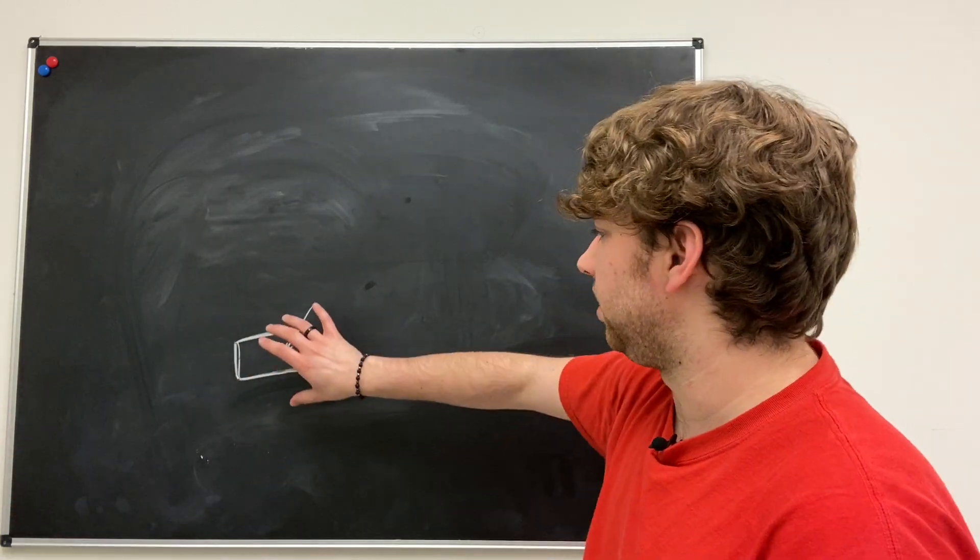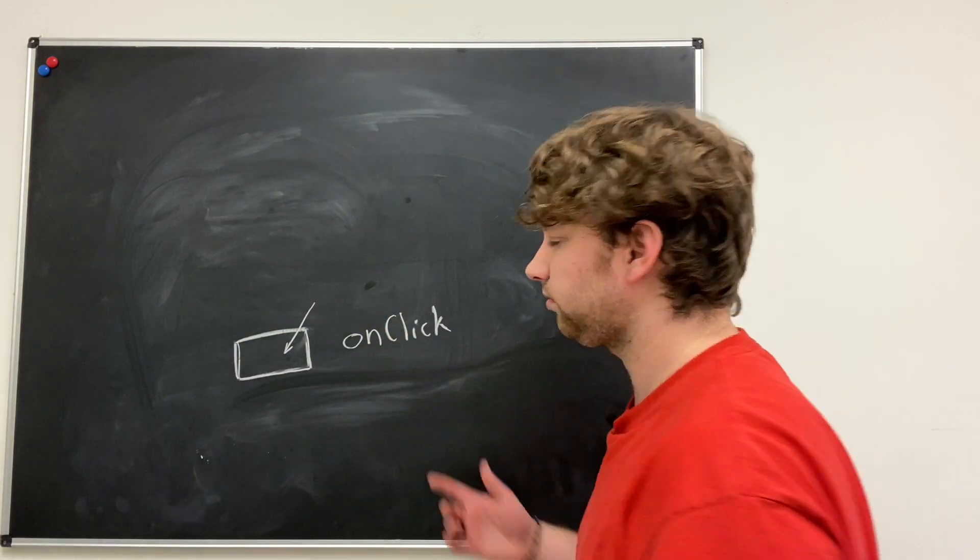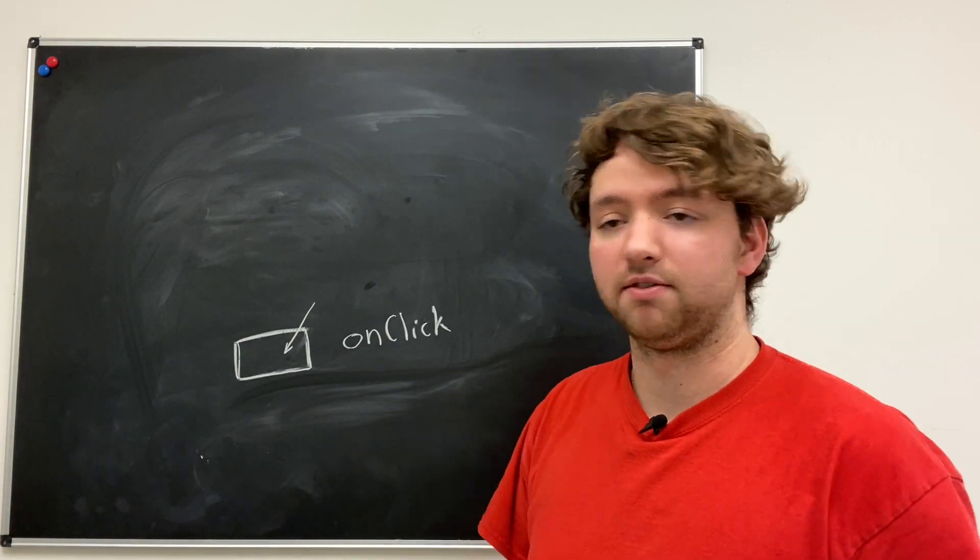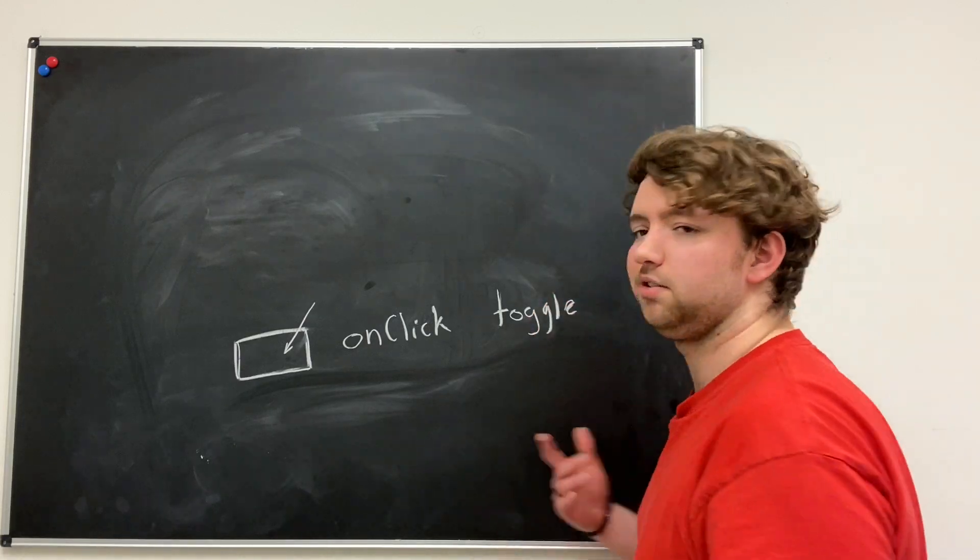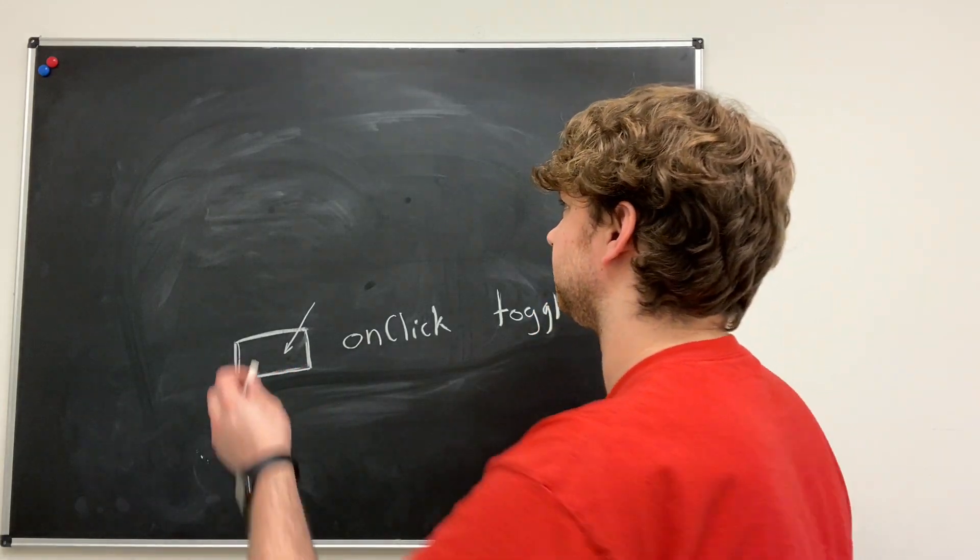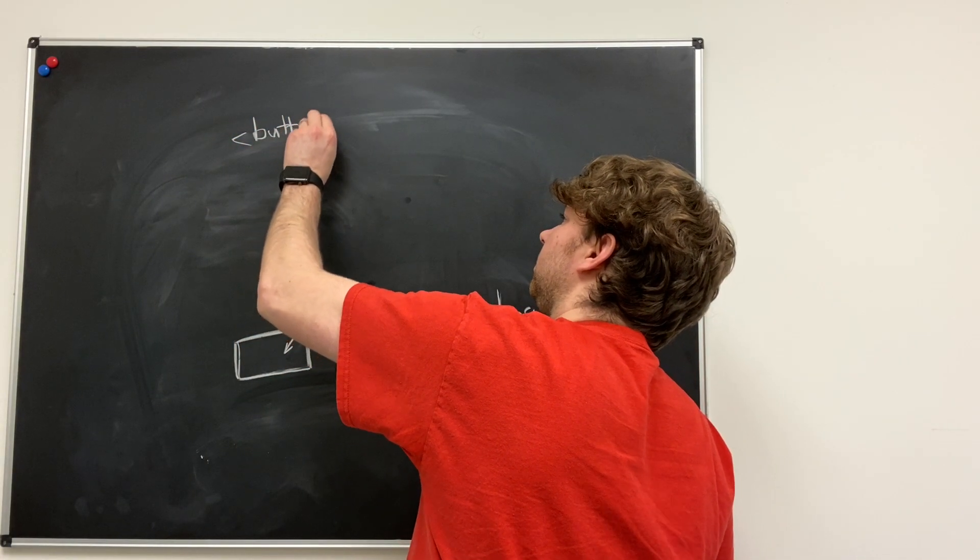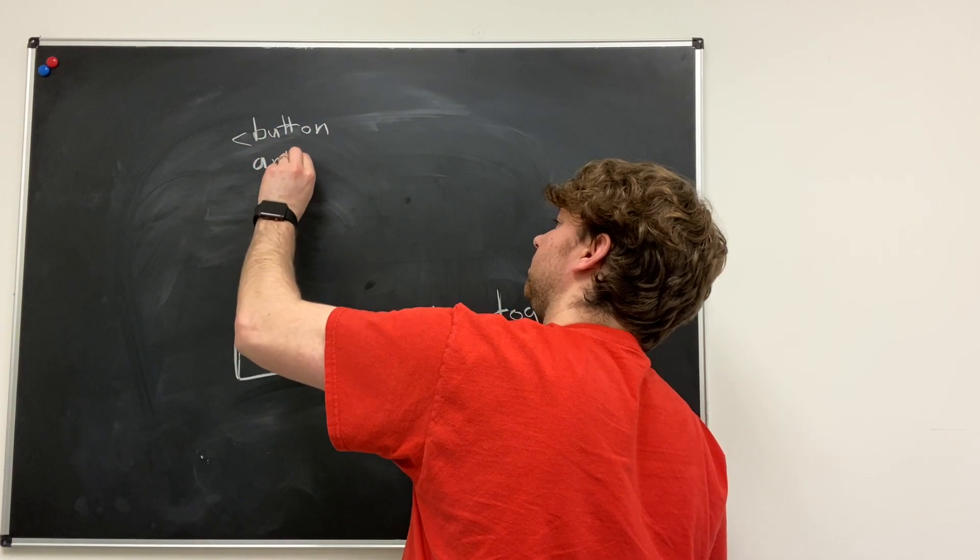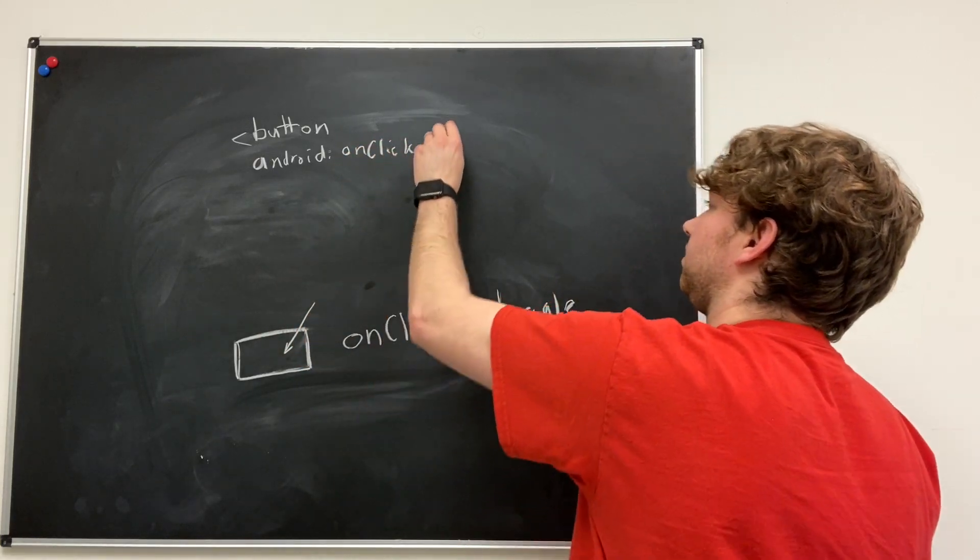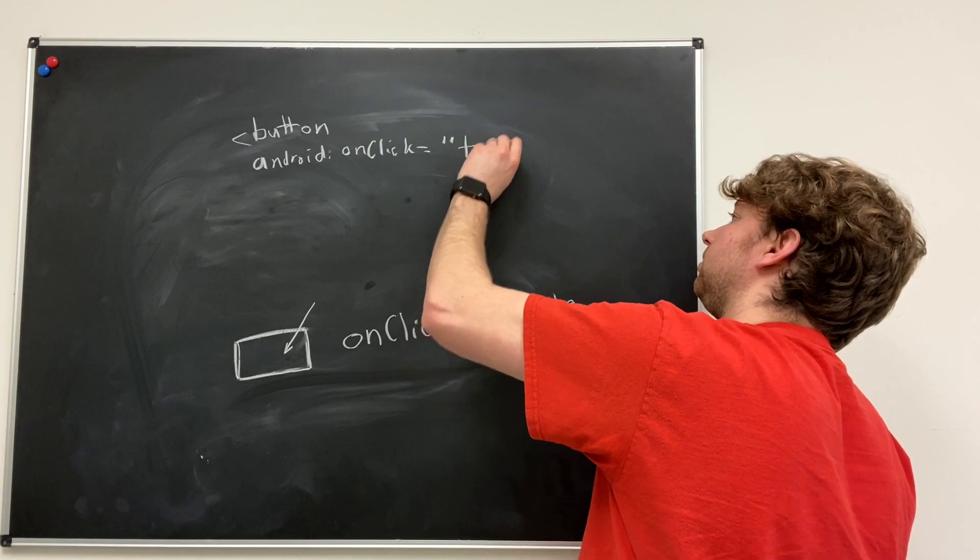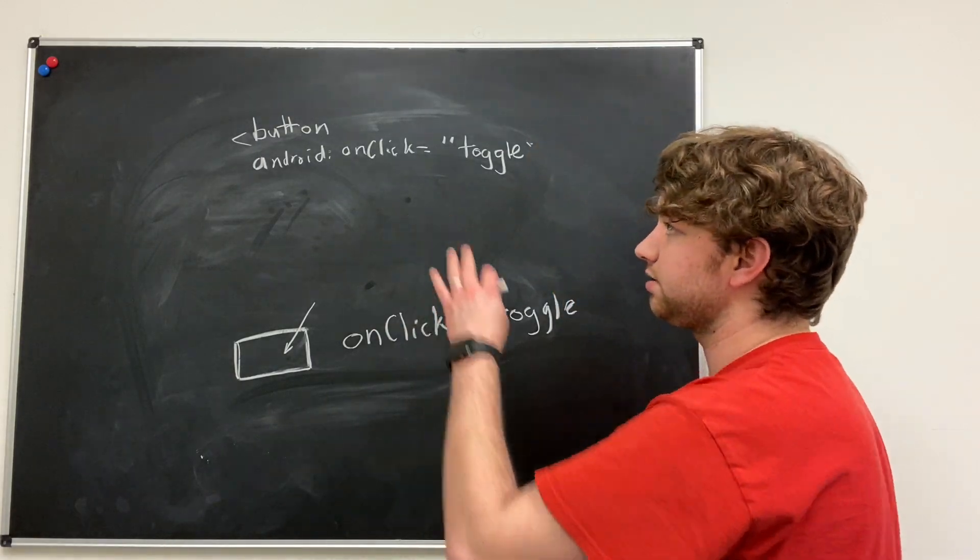In the attributes of this button, there's a special one called onClick, and we can assign it a value - the name of a method, for example toggle. Inside of the XML it's going to look a little something like this: button, android:onClick, and then that's going to be assigned a value toggle.